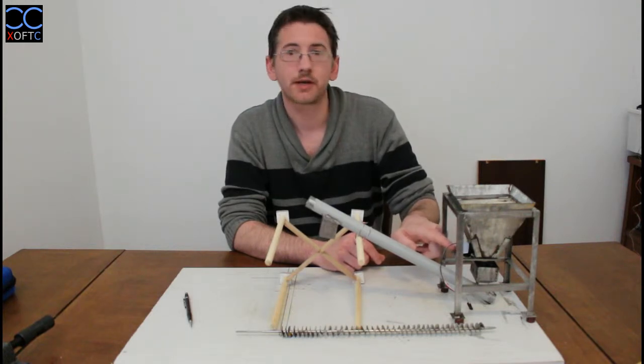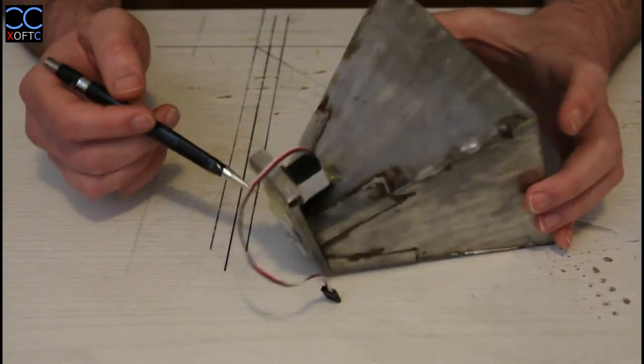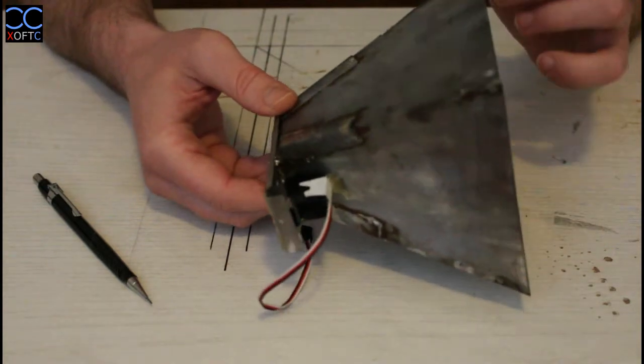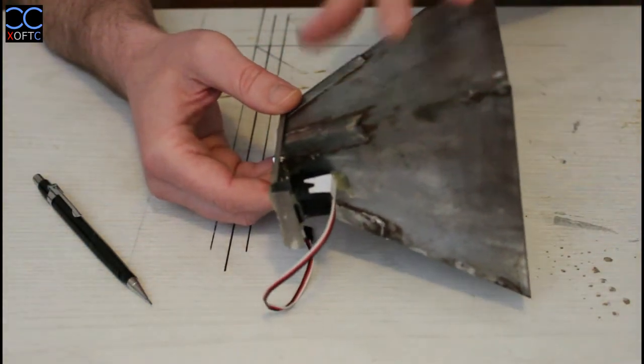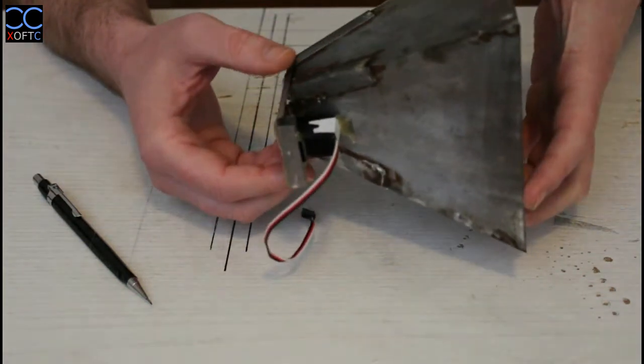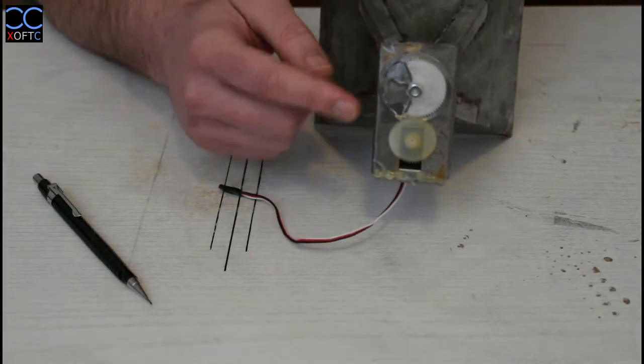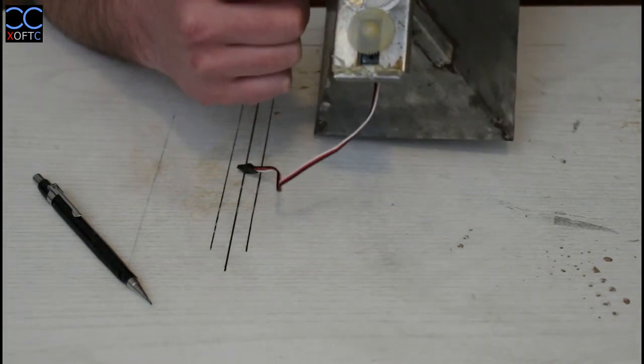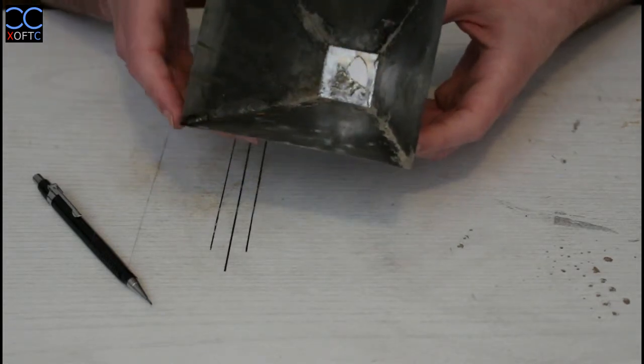So this is our hatch mechanism for the hopper here. If you looked at the previous videos you would have noticed there was only the hopper, and now I've attached this hatch. You can see it's two gears. Right now it's in the closed position.